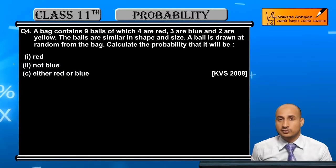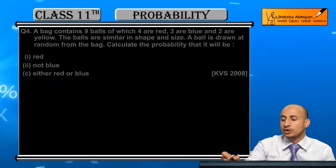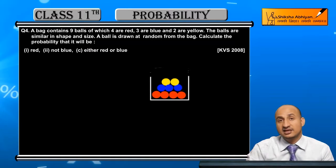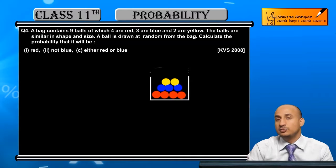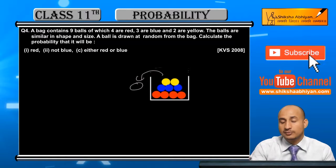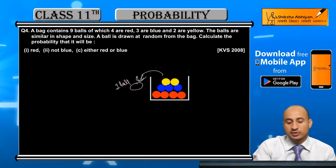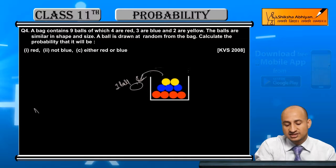First red, second part is not blue, and third part is either red or blue. So you can see here 4 red, 3 blue, and 2 yellow balls. Now you can see one ball outside, one ball drawn from the bag.